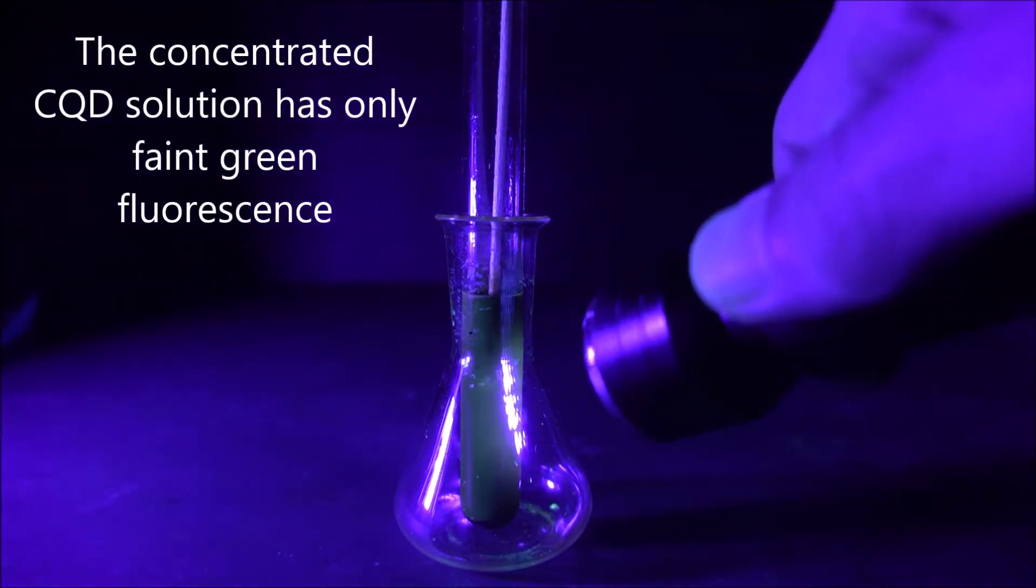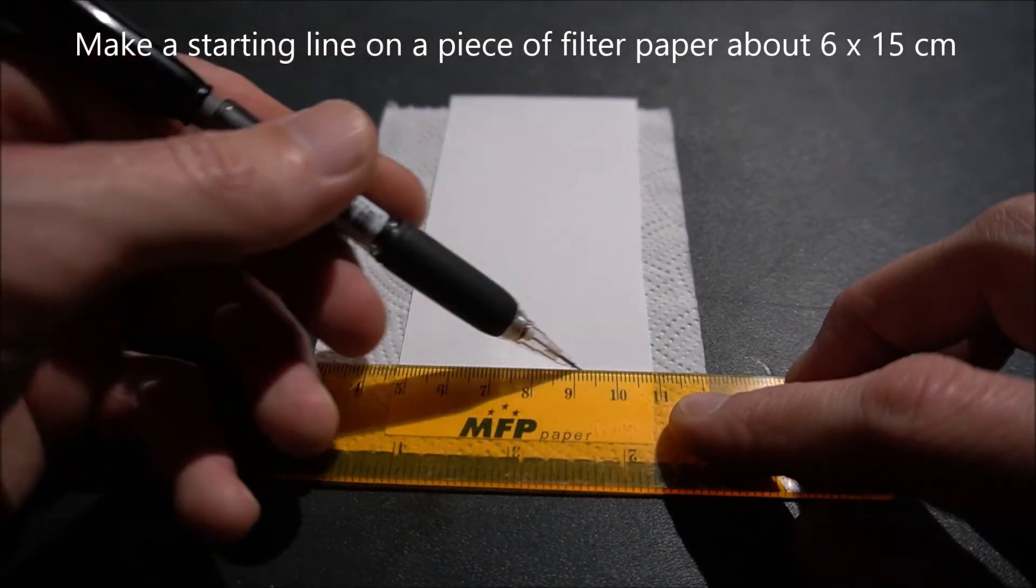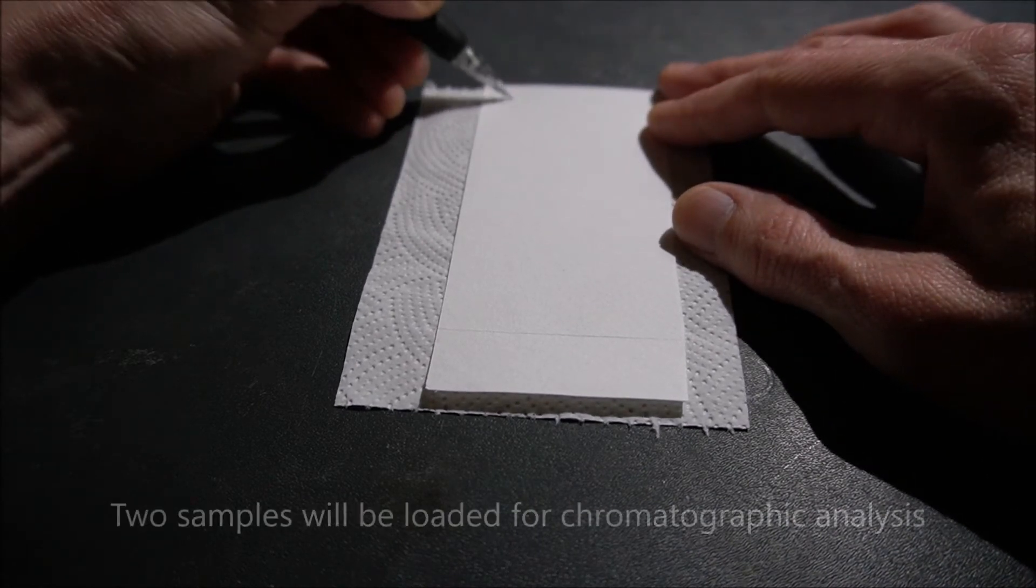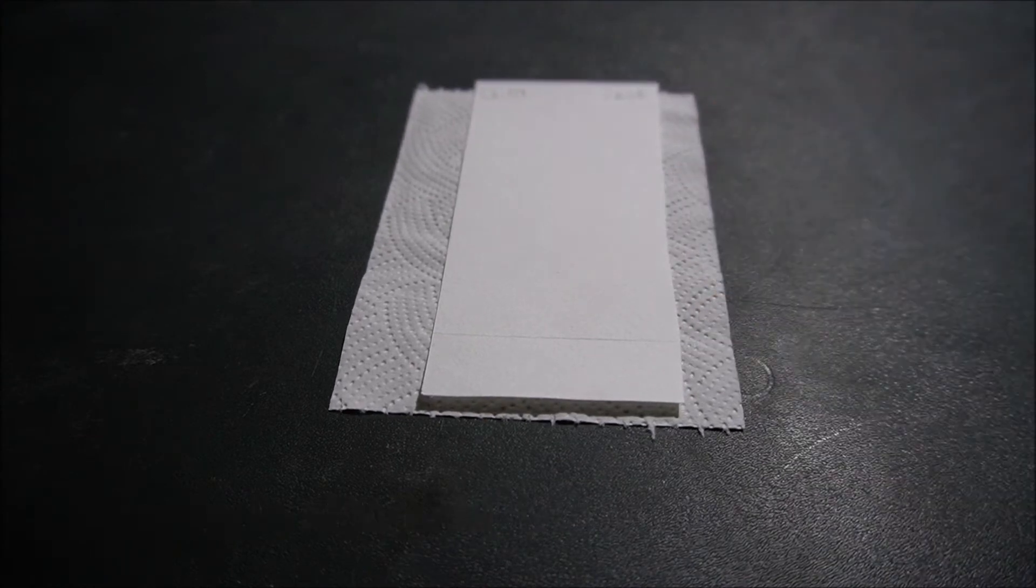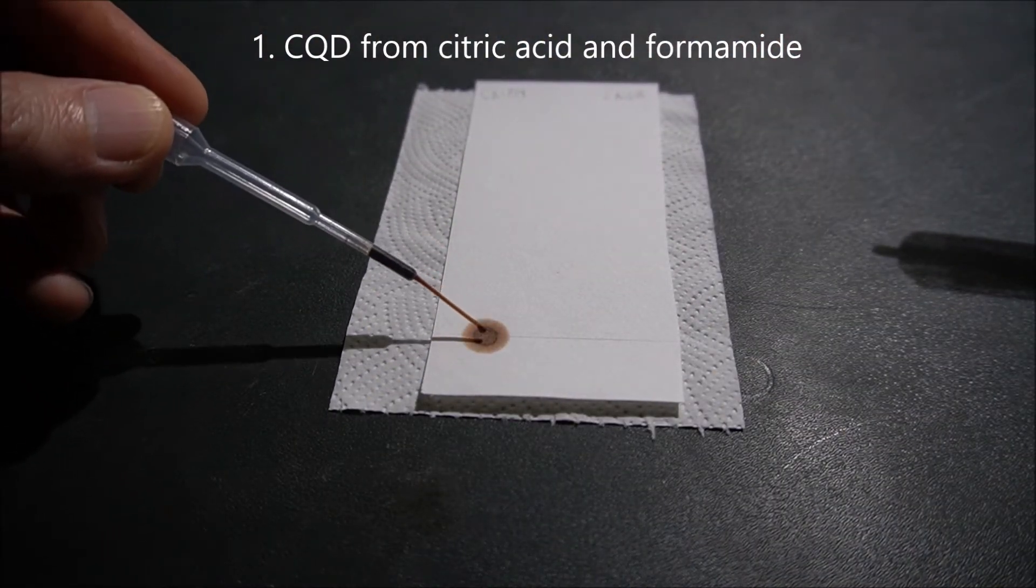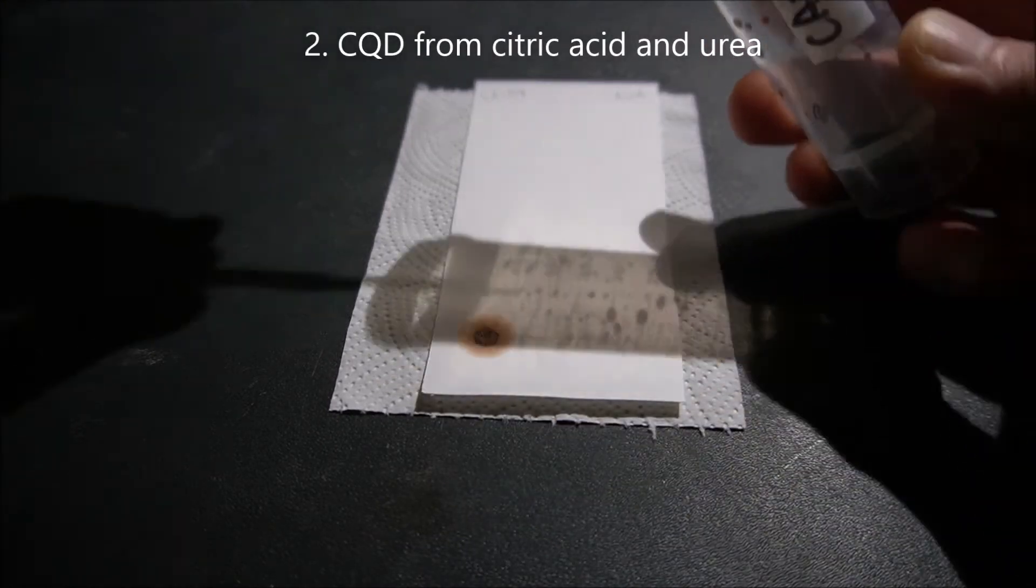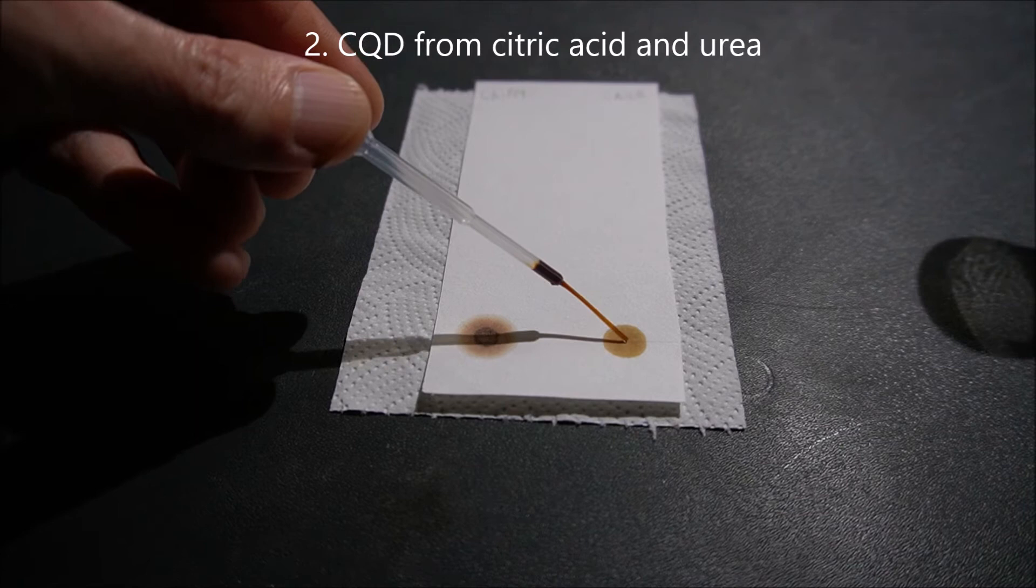The concentrated solution has only faint green fluorescence. Use a pencil to draw a starting line 2 cm from the edge of a filter paper cut to 6 x 15 cm rectangle. We'll load two different samples of carbon quantum dots for chromatographic analysis: the ones we just made from citric acid and formamide, and the others from citric acid and urea which were made in a separate video.